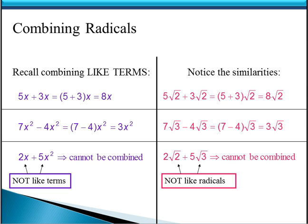Now what if they're not like terms? Remember that if we had something like 2x plus 5x squared, we cannot combine those with addition, because one is an x term and the other is an x squared term, so the variable portion is not exactly the same. The same thing applies to radicals. If the radical portion is not exactly the same, we cannot combine them with addition or subtraction. So 2 square root of 2 has square root of 2 as its radical part, and 5 square root of 3 has square root of 3 as its radical part — they are not the same, so we cannot combine these two terms because they are not like radicals.